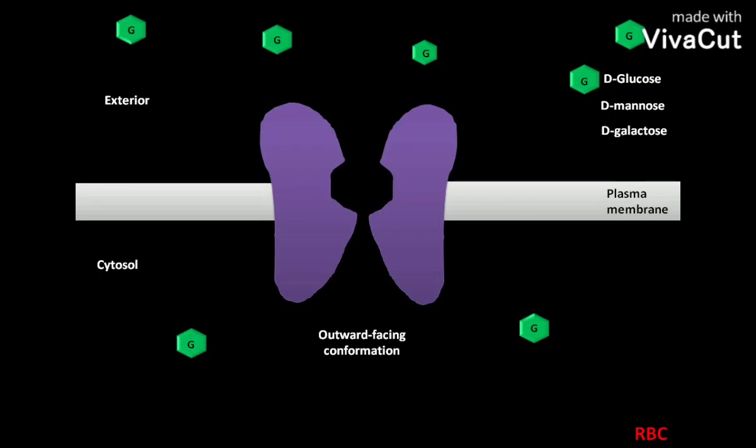Here we will discuss the transport of D-glucose denoted as capital G through GLUT1. If the concentration of glucose is higher outside the cell than inside, then D-glucose binds to the outward facing site of GLUT1. This binding of